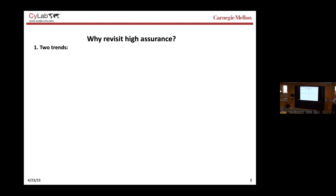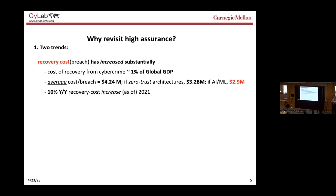Now the question is: why high assurance now? What has changed? Two things. First: the cost of recovery from a breach has increased substantially over the last decade. The cost of recovery from cybercrime is now about one percent of global GDP — when I last looked, about 800 billion dollars, with global GDP being about 80 trillion dollars. The average cost per breach has also increased dramatically; according to the IBM Ponemon survey, it's 4.2 million for recovering from the average breach.